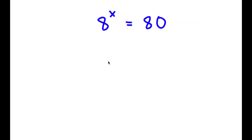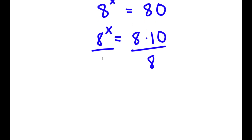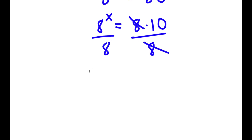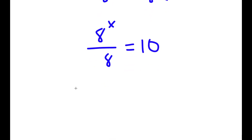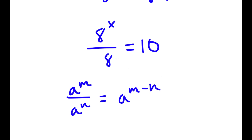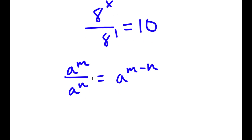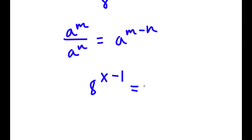Alright, so in this problem I have 2 to the power of x equals 80. To solve this, I'll first rewrite 80 as 8 times 10. So I have 2^x equals 8 times 10. Dividing both sides by 8 gives 2^x over 2^1 — using the rule that a^m over a^n equals a^(m−n) — which equals 2^(x−1) equals 10.